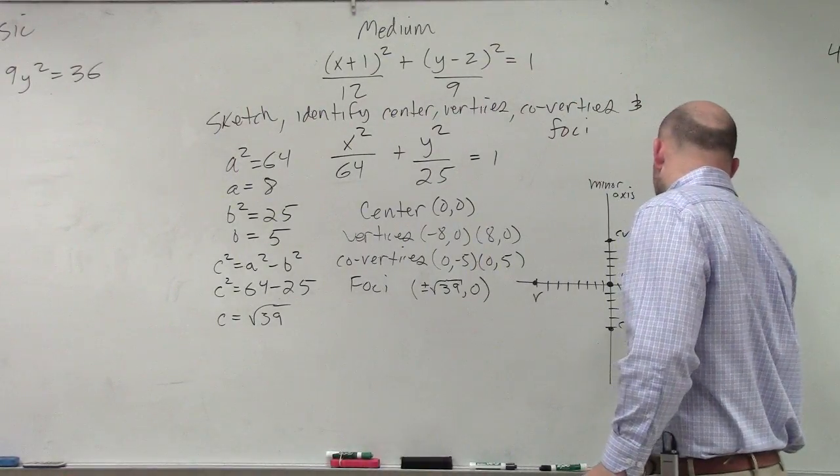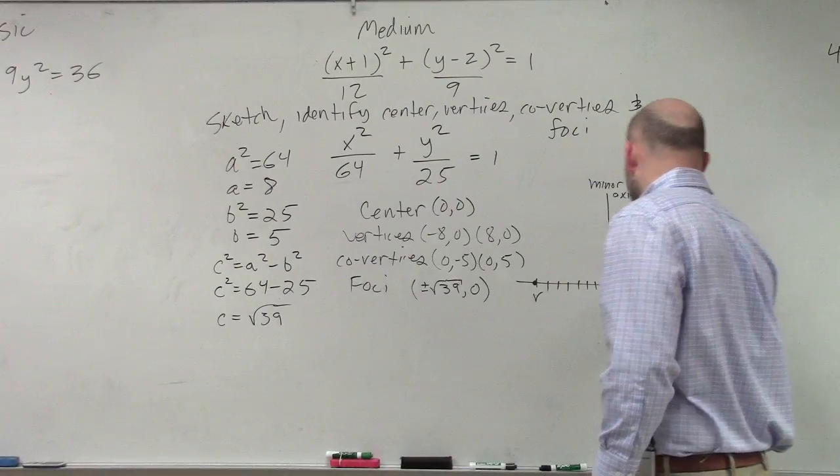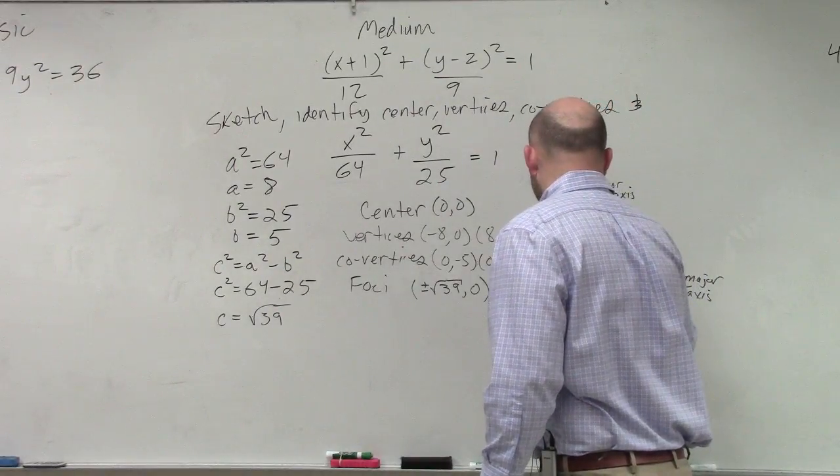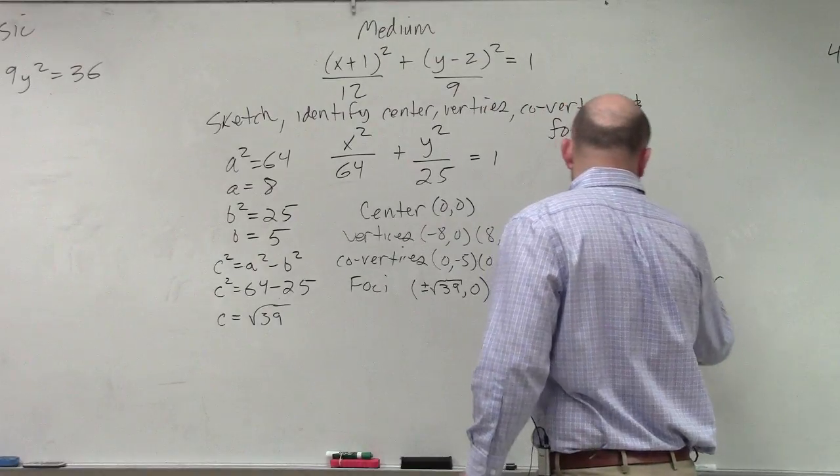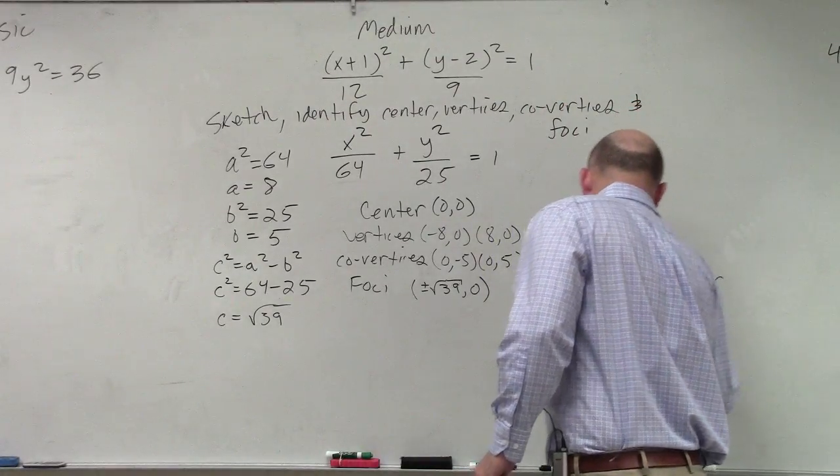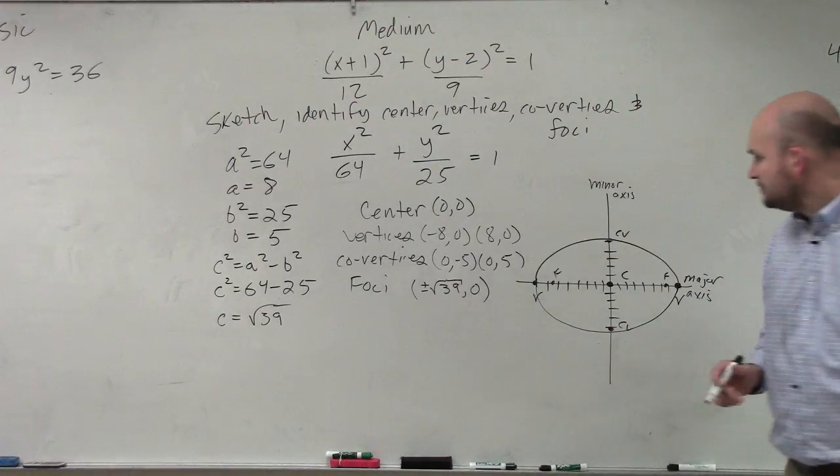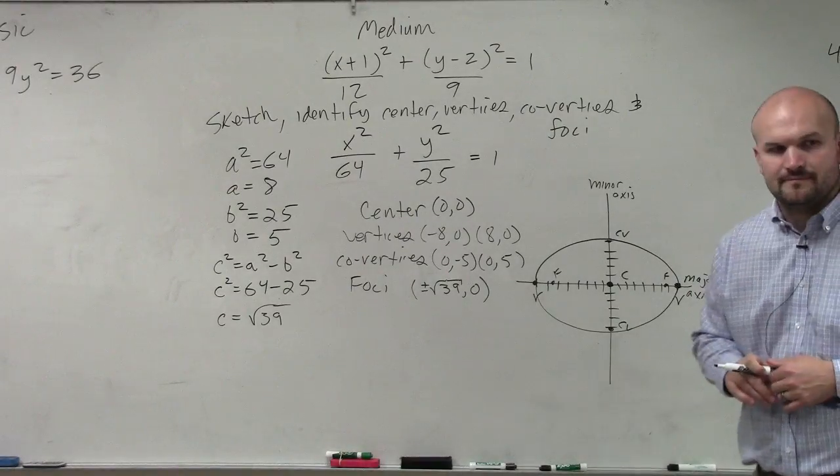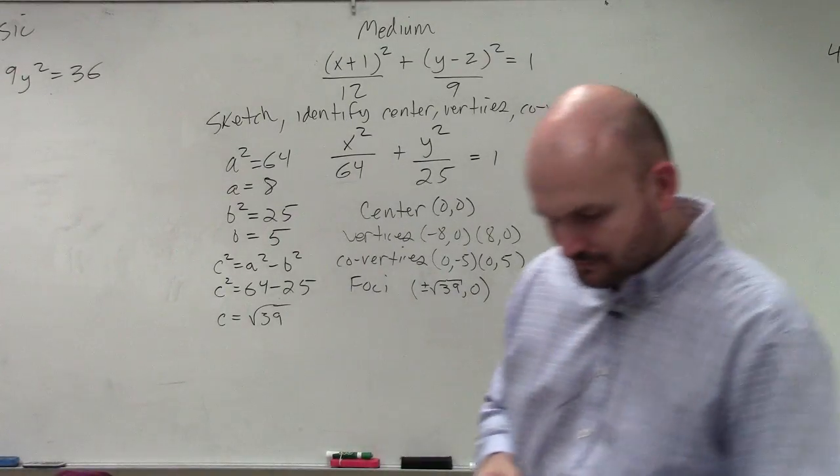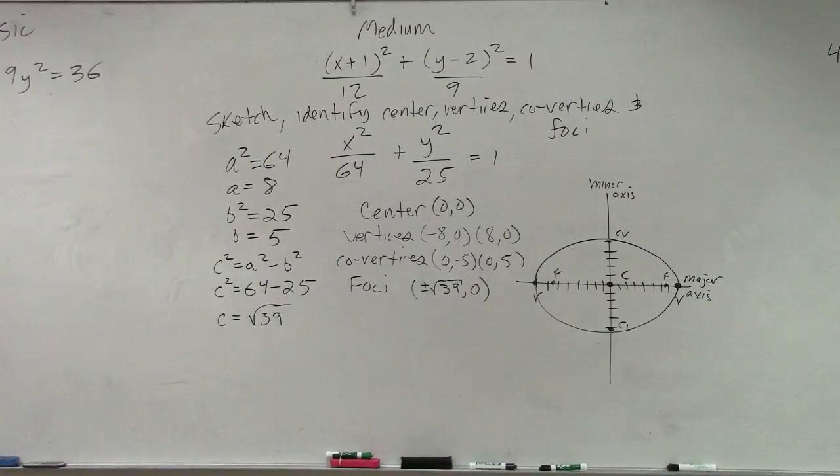So between 6 and 7, foci. So it doesn't have to be exact. No. And there you go. Nice little ellipse. OK?